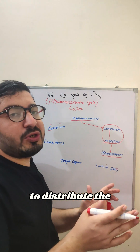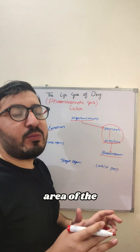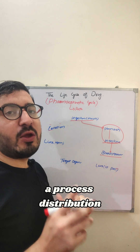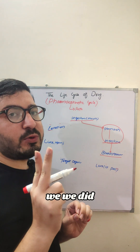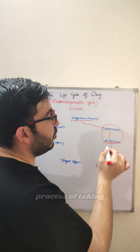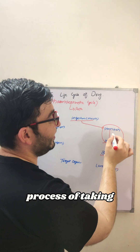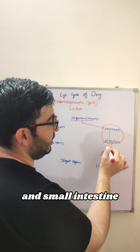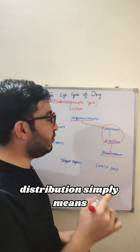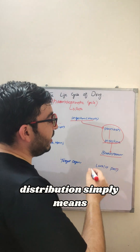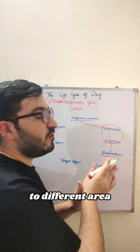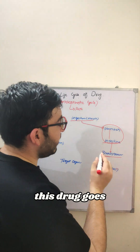The bloodstream is responsible for distributing the drug to different areas of the body, which is called distribution. So we have two processes: number one is absorption — the process of taking the drug from the stomach and small intestine into the bloodstream; and number two is distribution — distributing the drug from the bloodstream to different areas of the body.